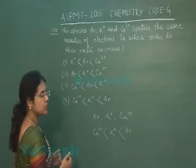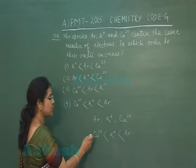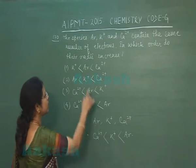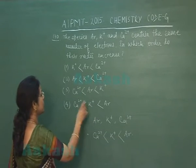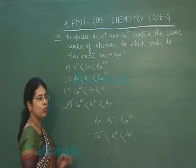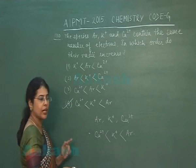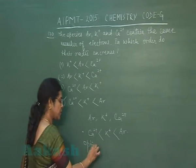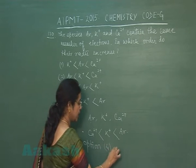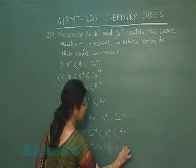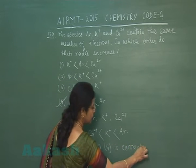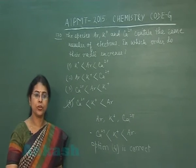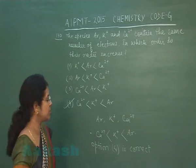Looking at the four options given, we find this order represented in option 4. So the fourth option is the correct one. Radii is inversely related to effective nuclear charge.